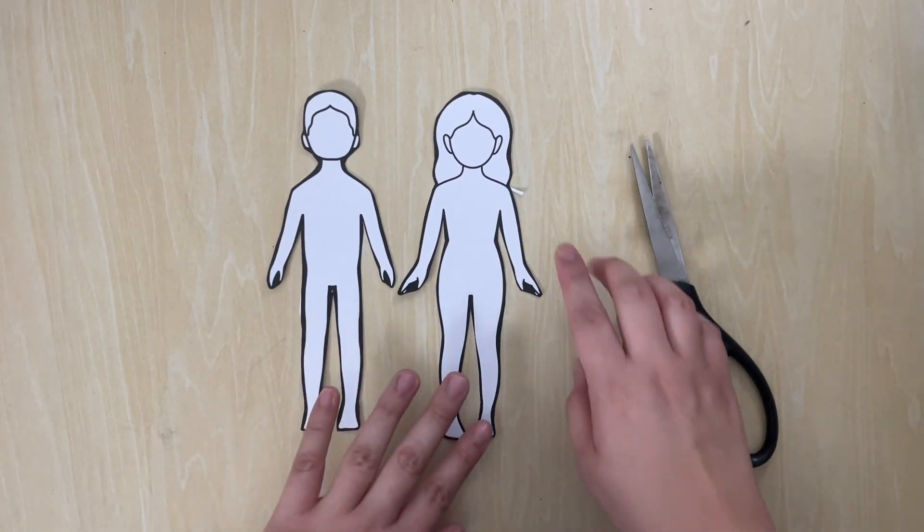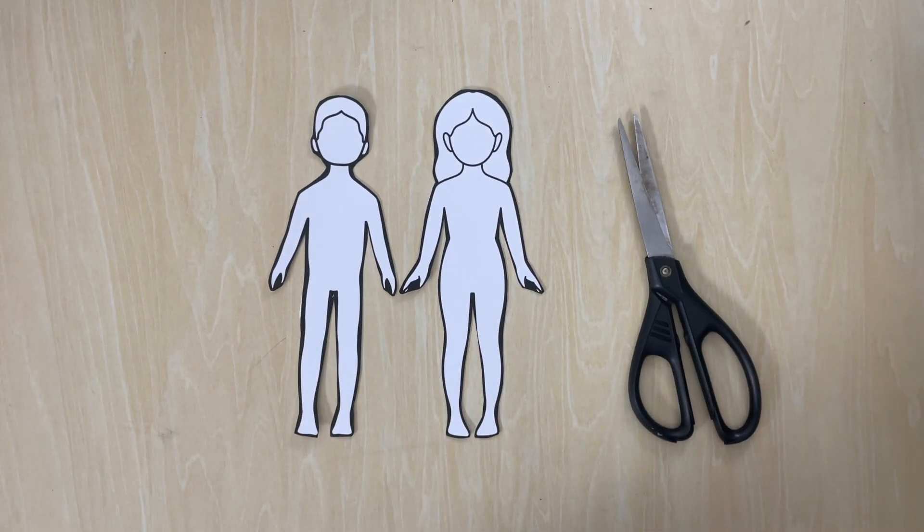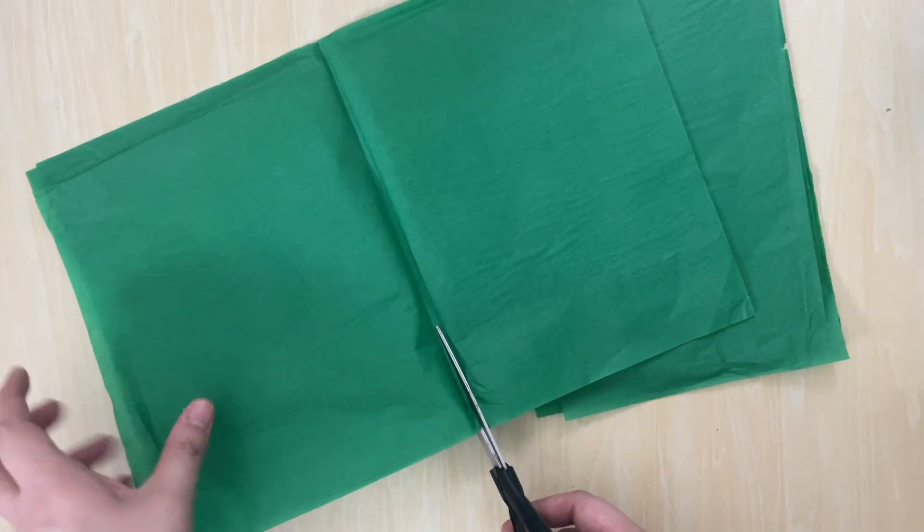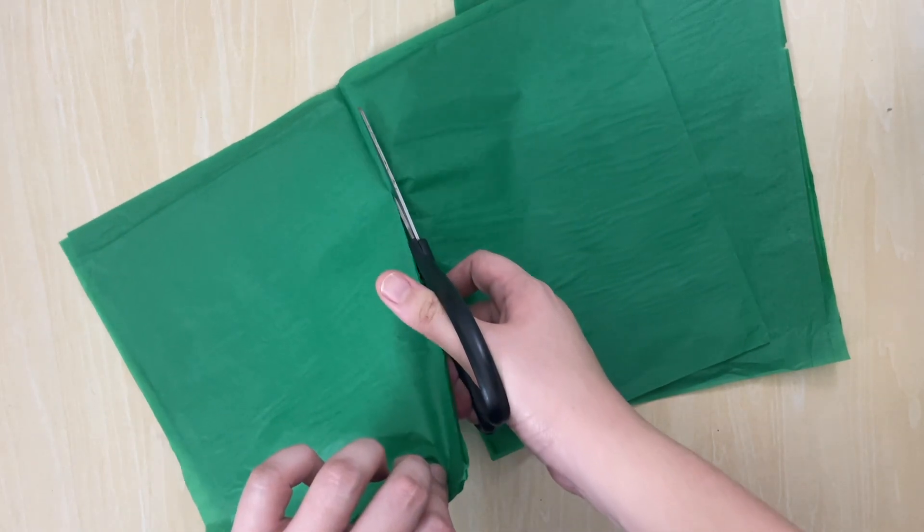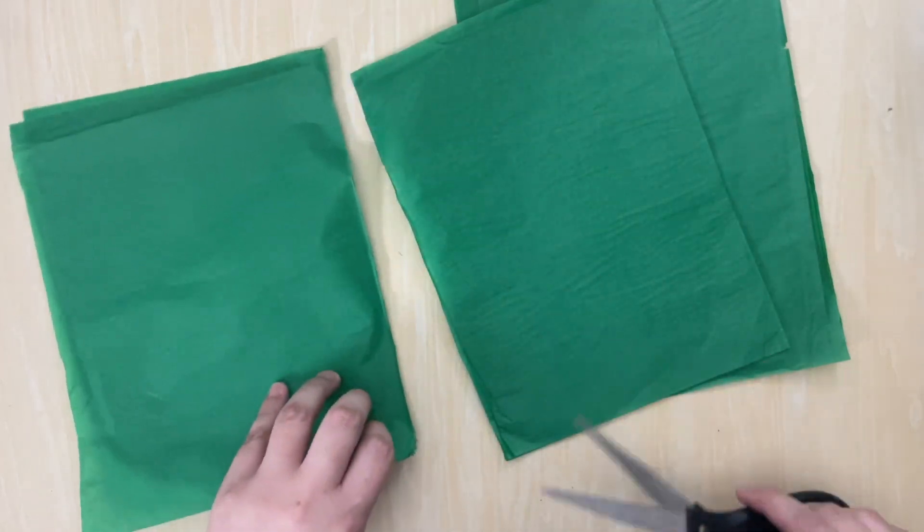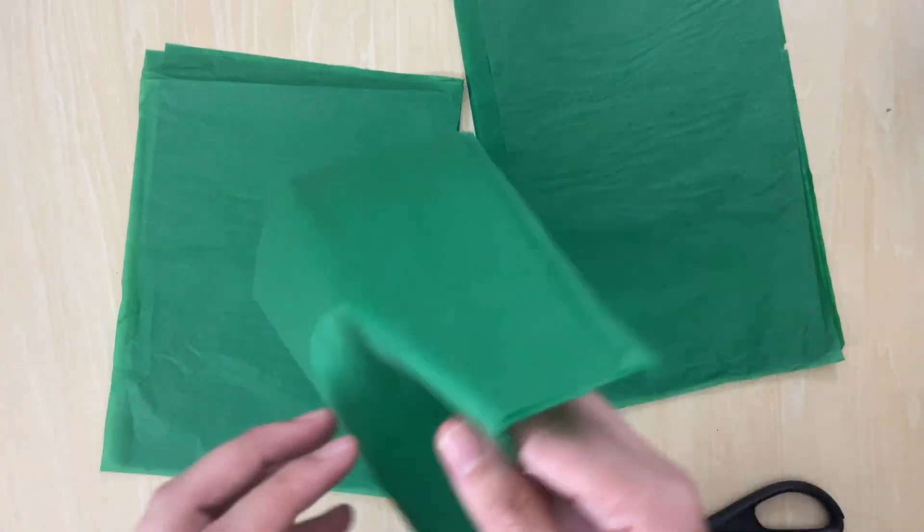Each kid will receive a pair of paper dolls, one Adam and one Eve. Next let's grab our Japanese paper and using scissors let's just cut along the folds. We really need just a tiny piece of Japanese paper to cover these paper dolls.